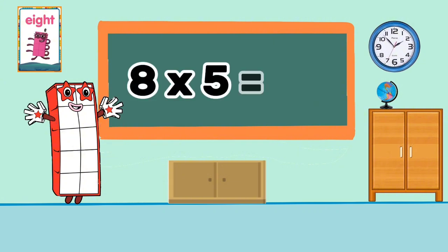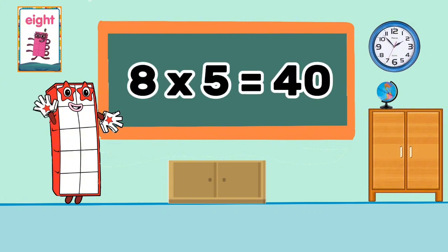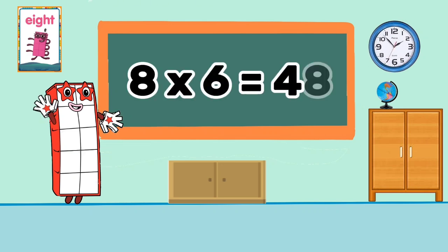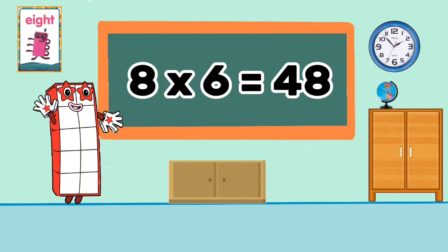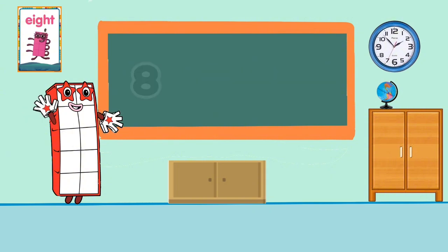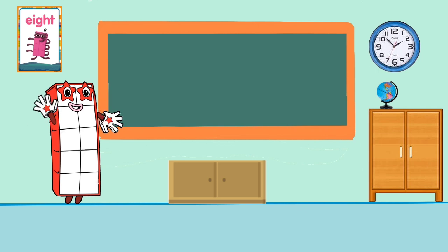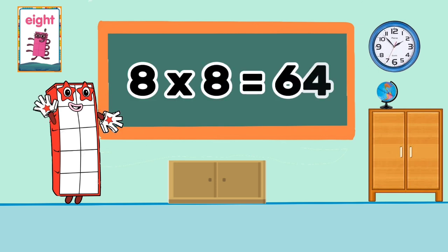8 times 5 equals 40. 8 times 6 equals 48. 8 times 7 equals 56. 8 times 8 equals 64.